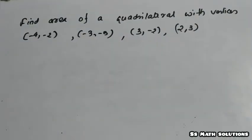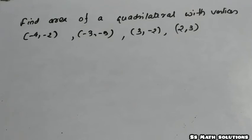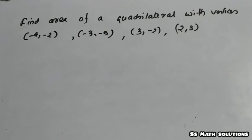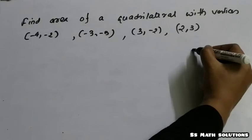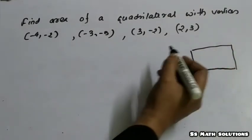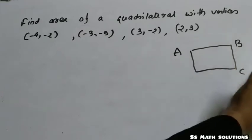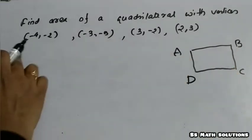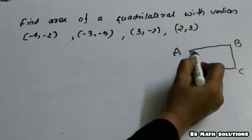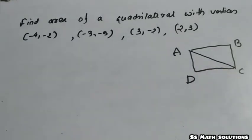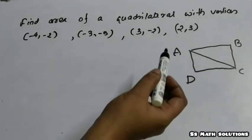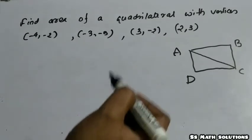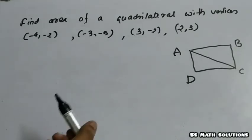Here is another type of question: Find the area of a quadrilateral with vertices A(−4, −2), B(−3, −5), C(3, −2), and D(2, 3). A quadrilateral is a four-sided polygon. We can draw it as A, B, C, D. We need to split this into two triangles — triangle ABC and triangle ACD — then find the area of each triangle and add them to get the total area.